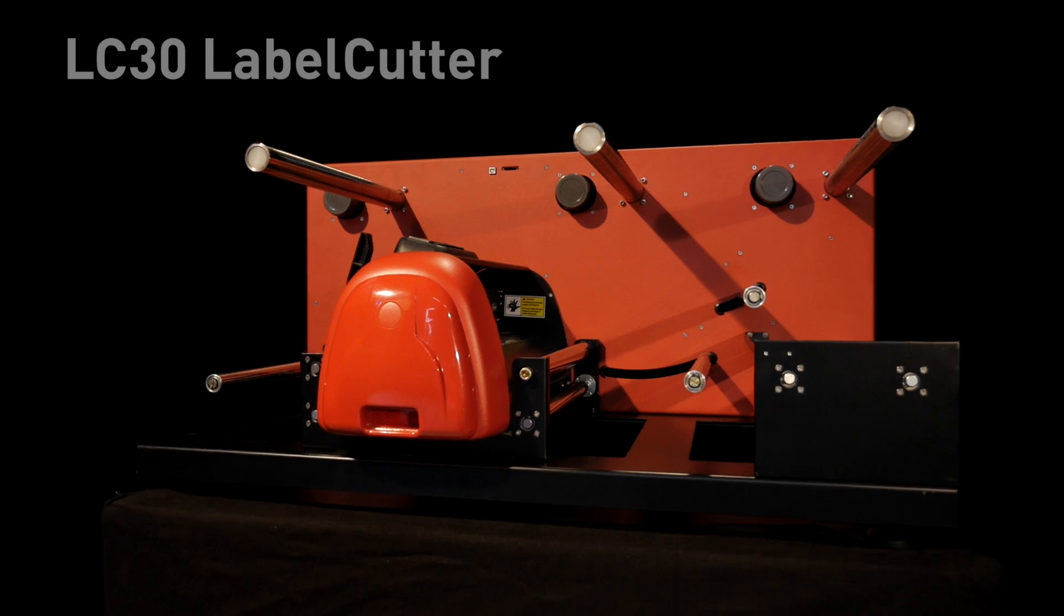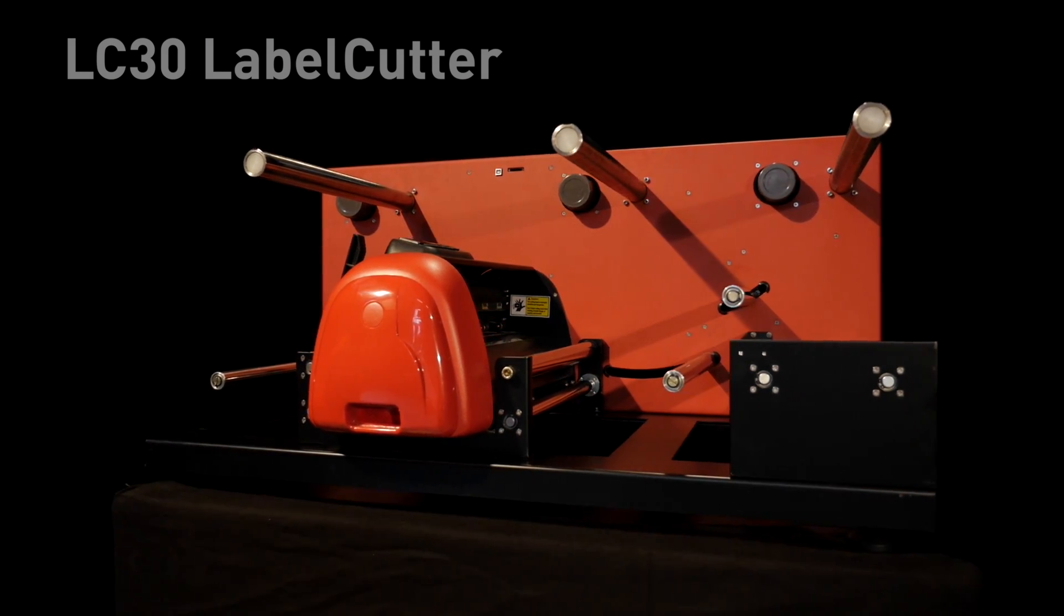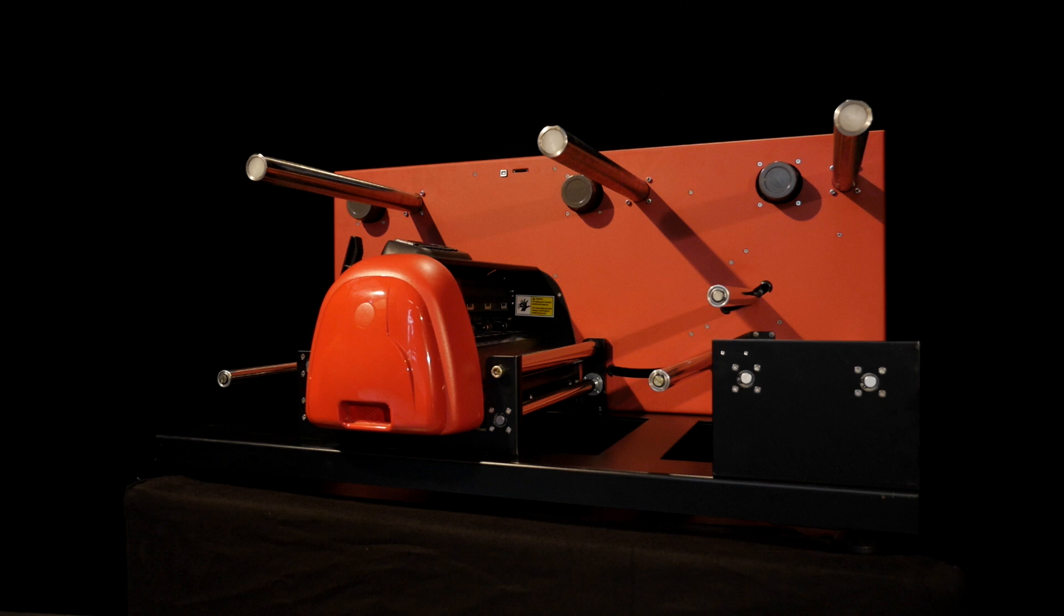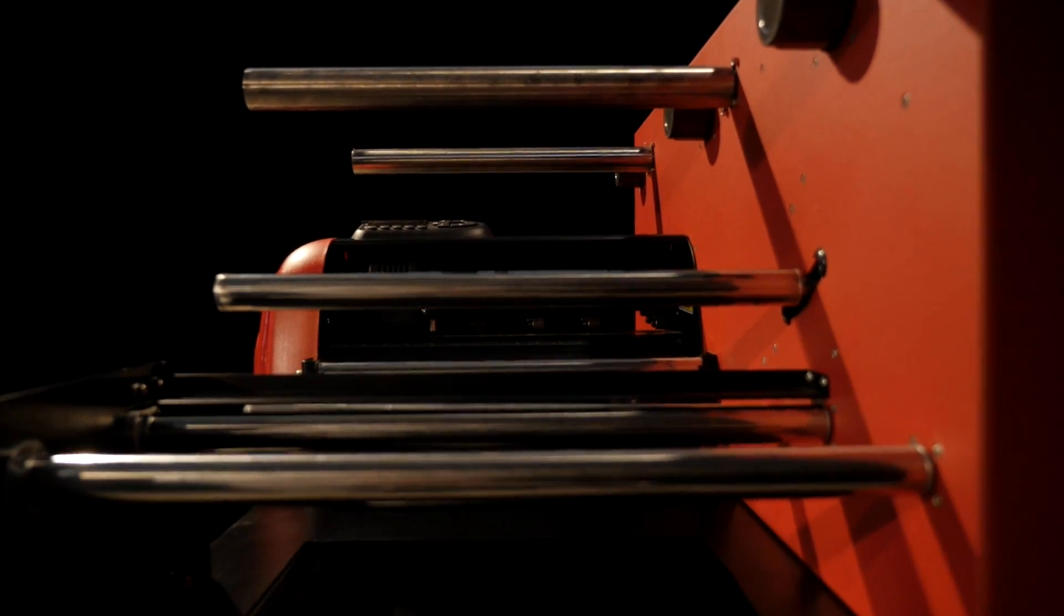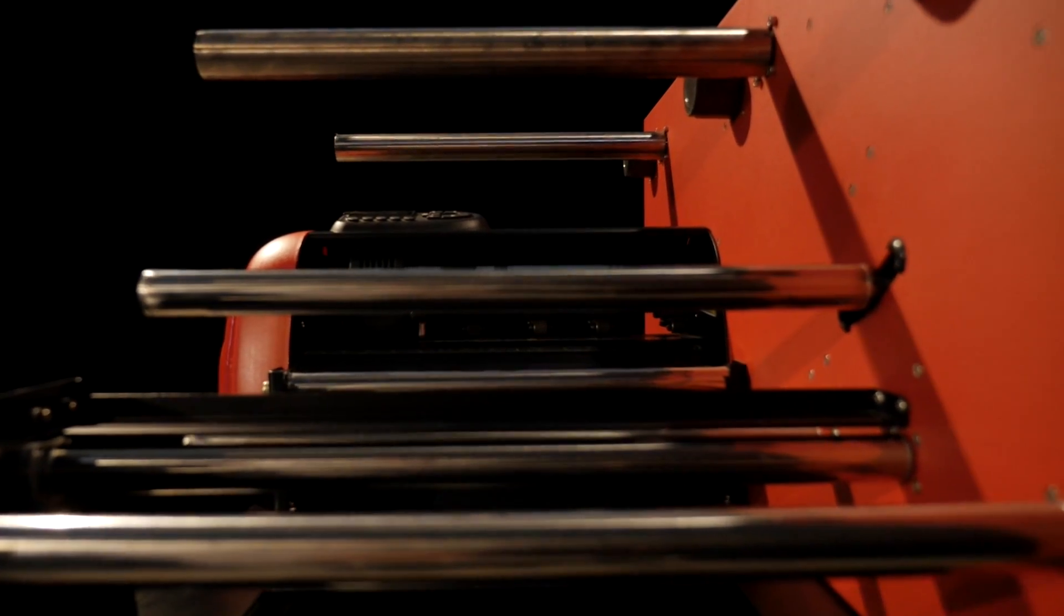The Sakabo LC30 is a roll-to-roll label cutter for automatic production of free-form labels and tags in small and medium quantities.